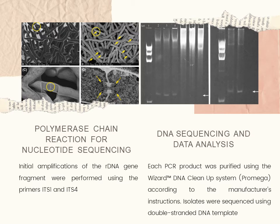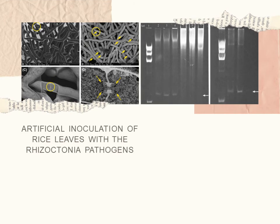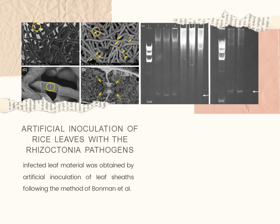Sequence data of complementary strands were compared visually and sequences aligned using ClustalW. The fifth method is artificial inoculation of rice leaves with Rhizoctonia pathogens. Infected leaf material was obtained by artificial inoculation of leaf species following the methods of Bondman et al. Leaves of rice cultivar IR-22 were collected from 60-day-old plants and cut to approximately 60 mm length.